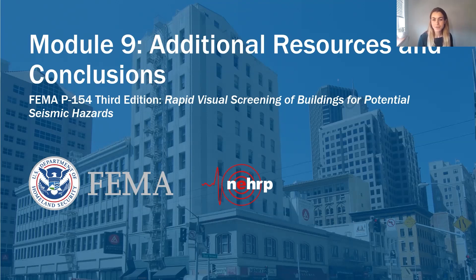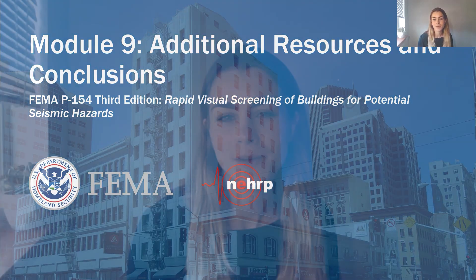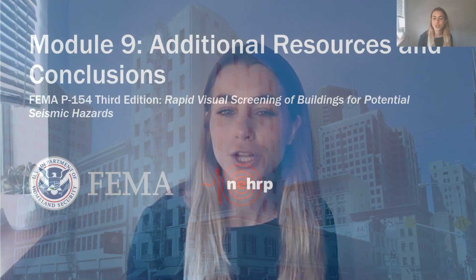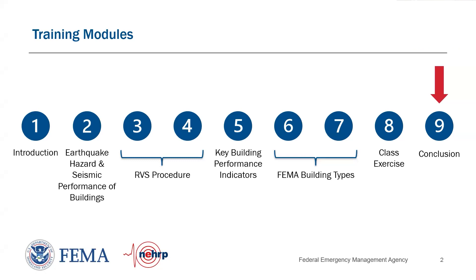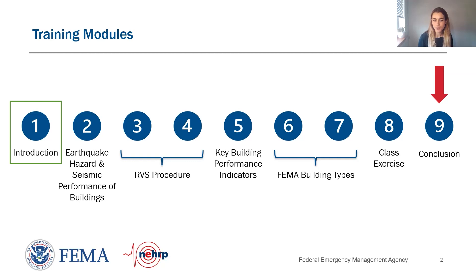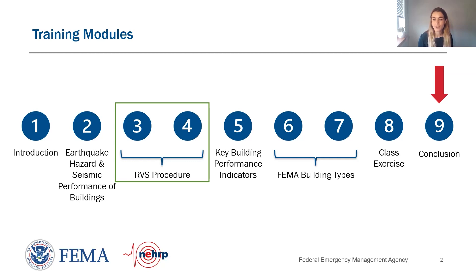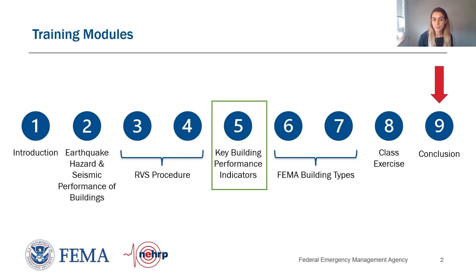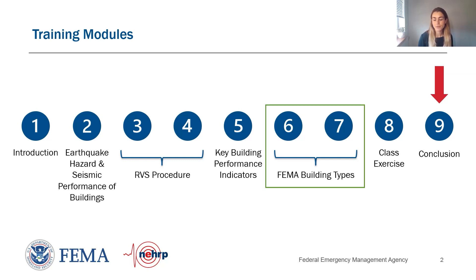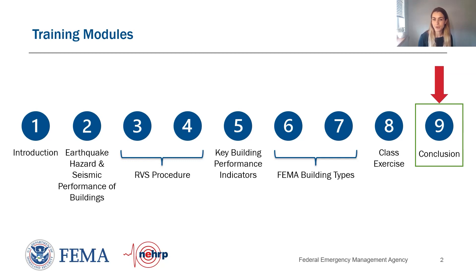Welcome back to this free training series on FEMA P-154, Rapid Visual Screening of Buildings for Potential Seismic Hazard, brought to you by FEMA's National Earthquake Technical Assistance Program. This is the concluding module — the final of nine training videos. Modules 1 through 8 covered introduction, earthquake hazard, the RVS process, building performance indicators, FEMA building types, and a class exercise.